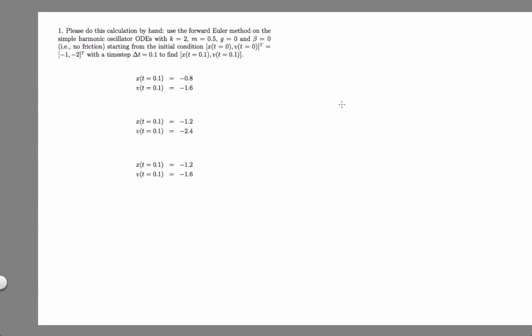The first task here is to plug the constants into the equations to see what we're working with. Here are the simple harmonic oscillator equations. And here's what I get if I plug in g equals beta equals zero, k equals two, and m equals 0.5.